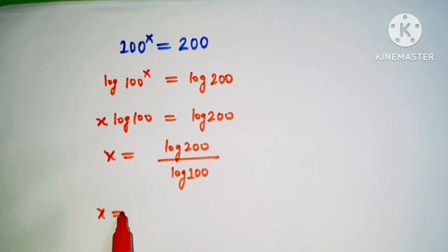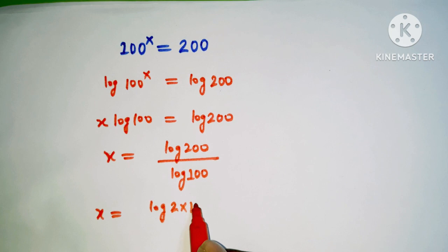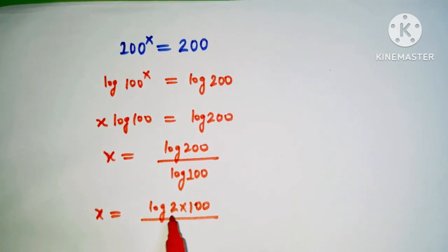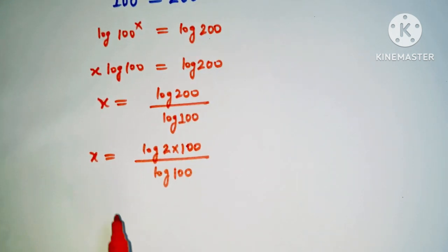We have x equal to... this 200 can be written as log 2 multiply 100 divided by log 100.